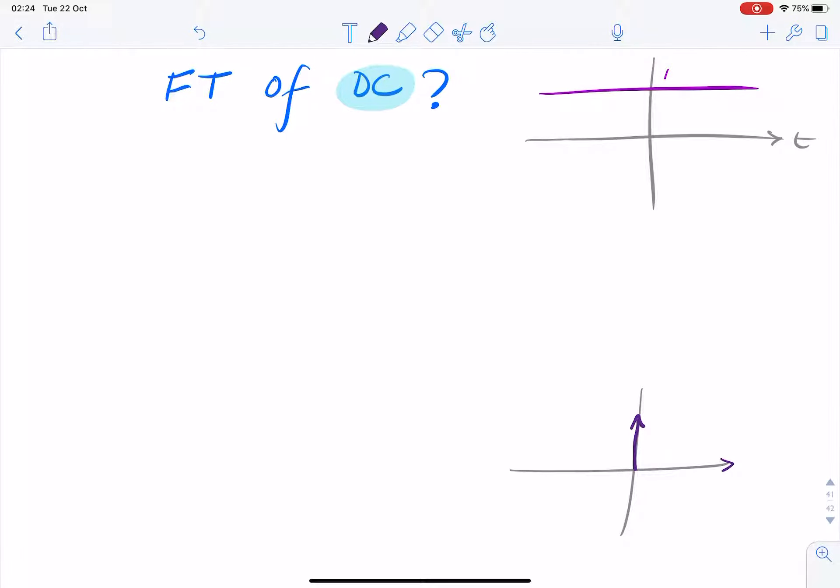From the Fourier series, we know that the A0 term is the DC value. So at zero hertz, we expect that to be the DC component. But how can we show that? How can we find the Fourier transform of DC?